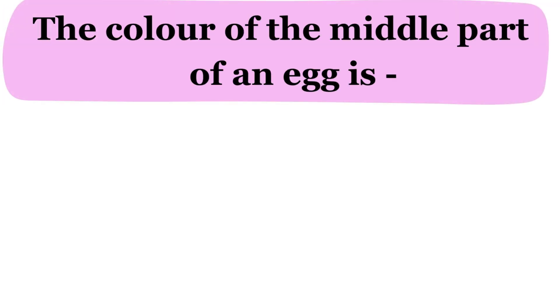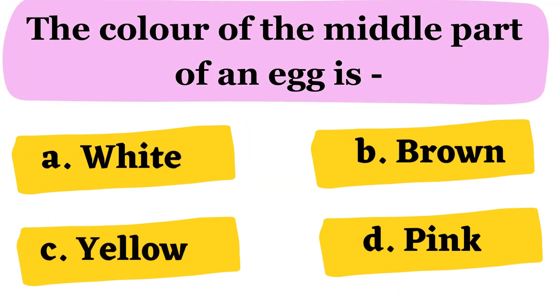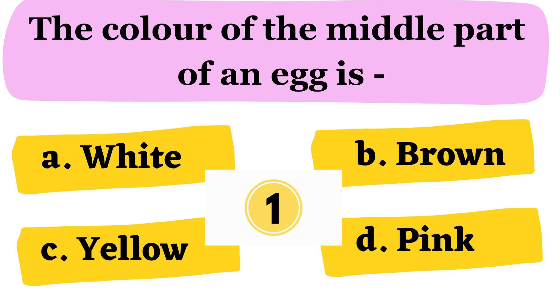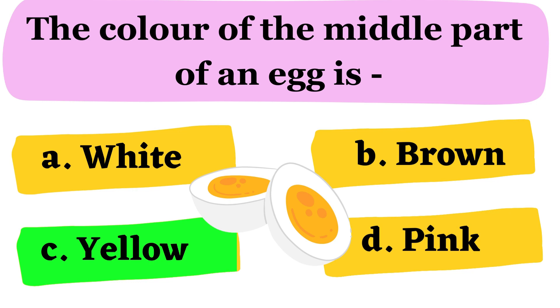The color of the middle part of an egg is: A. White B. Brown C. Yellow D. Pink. The correct answer is option C. Yellow.